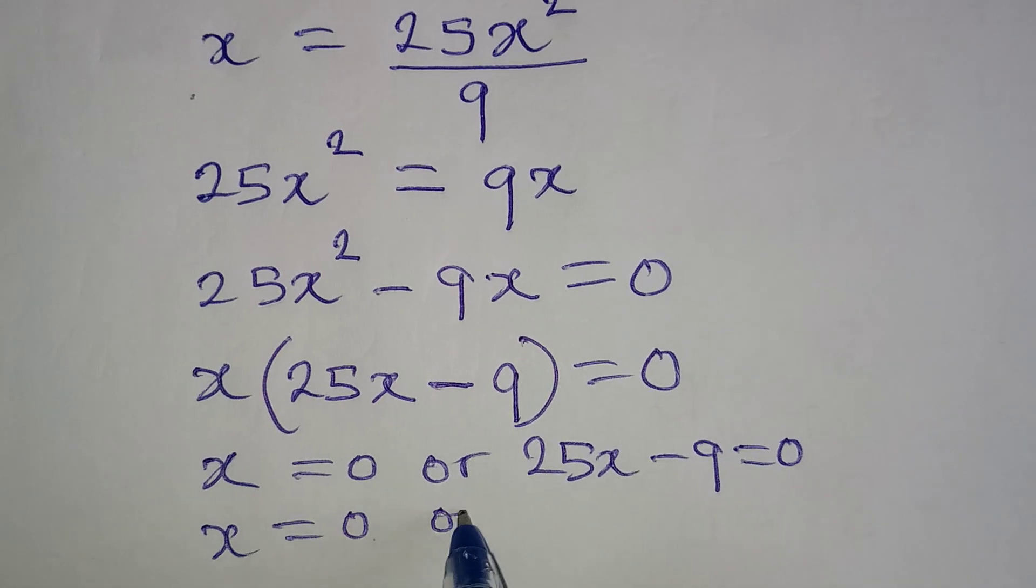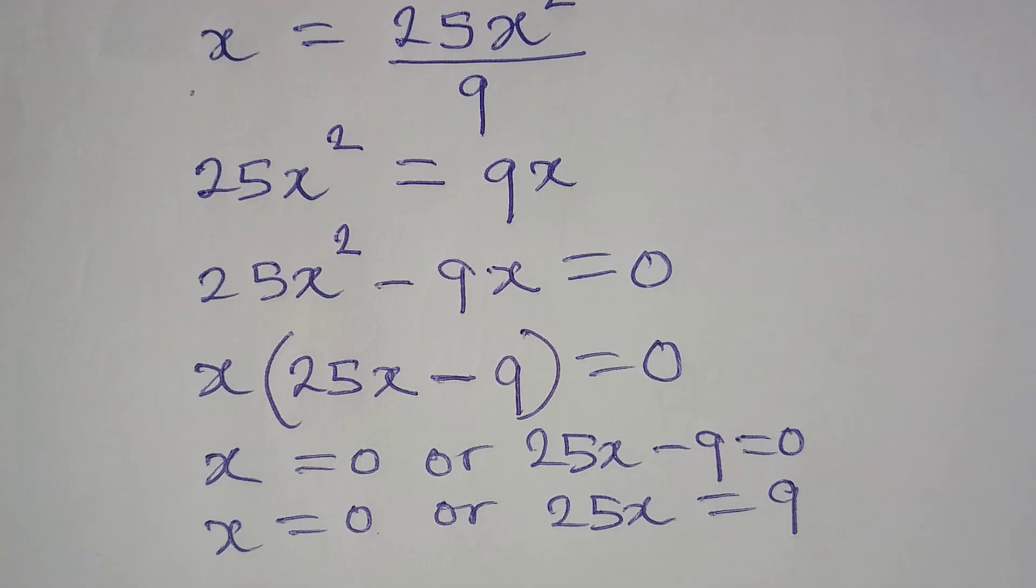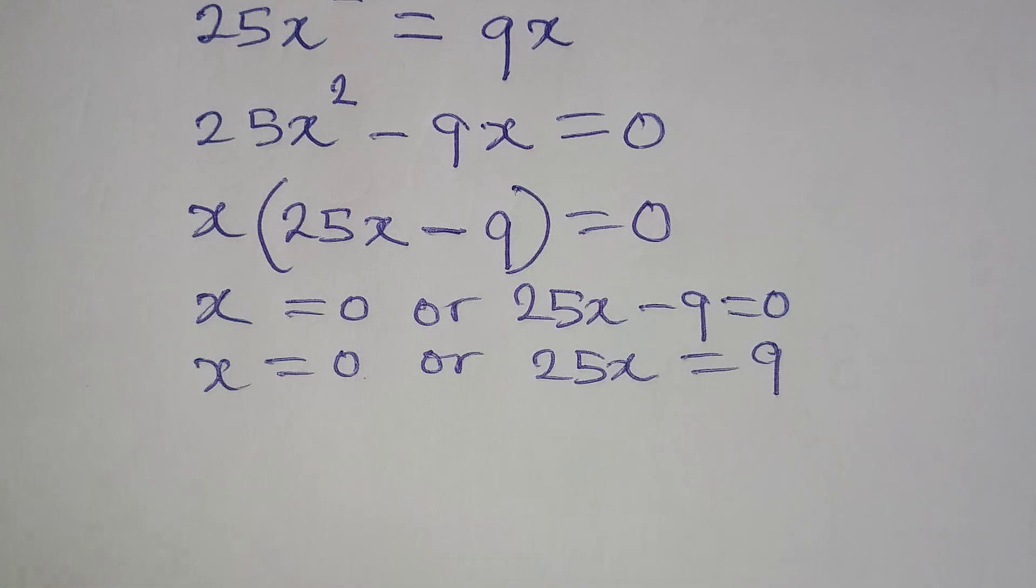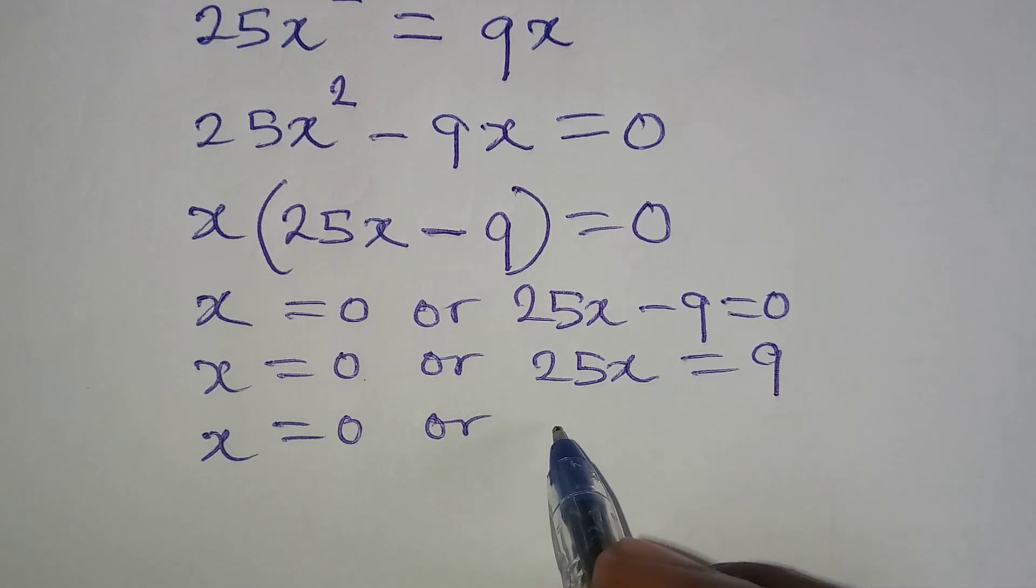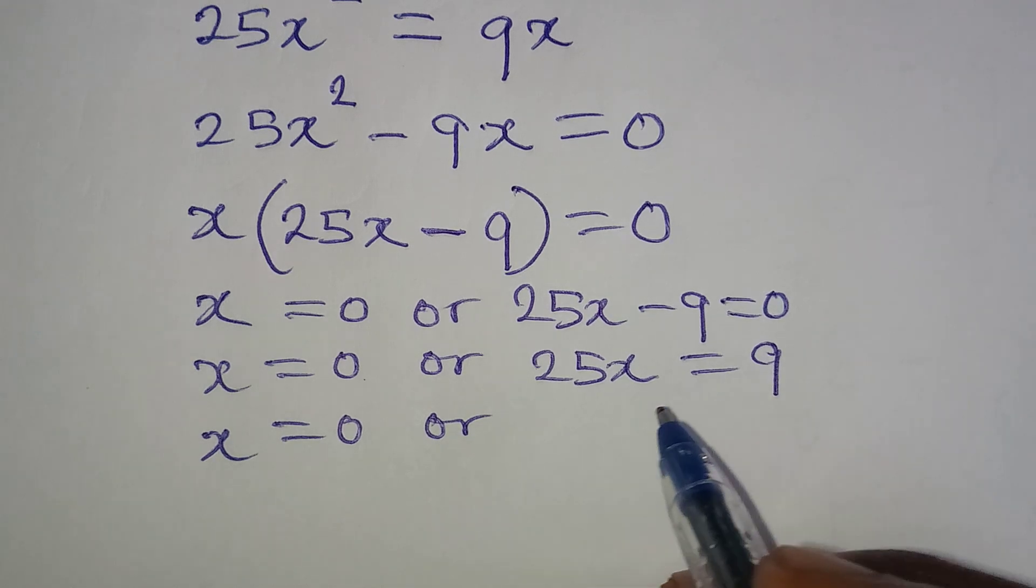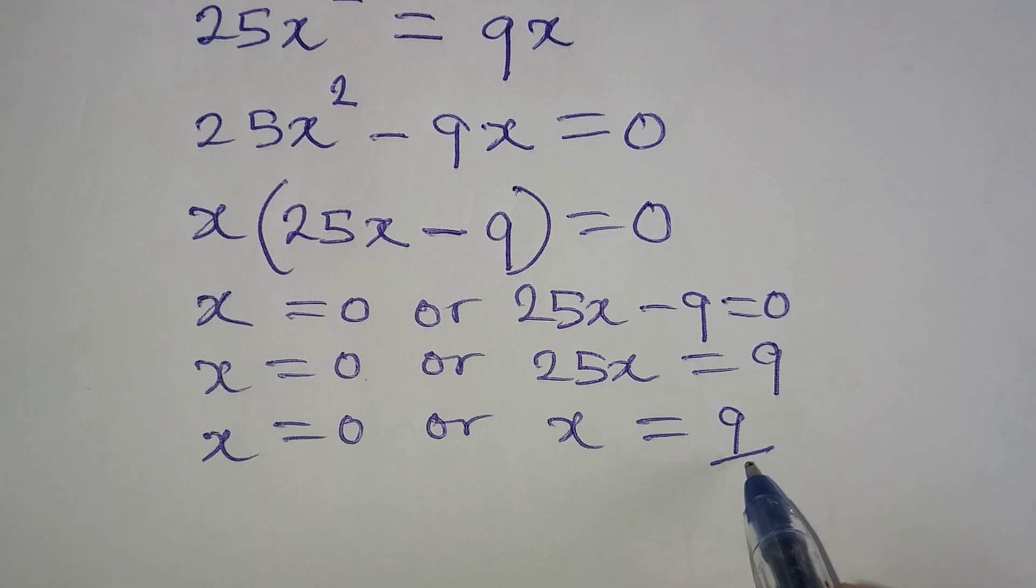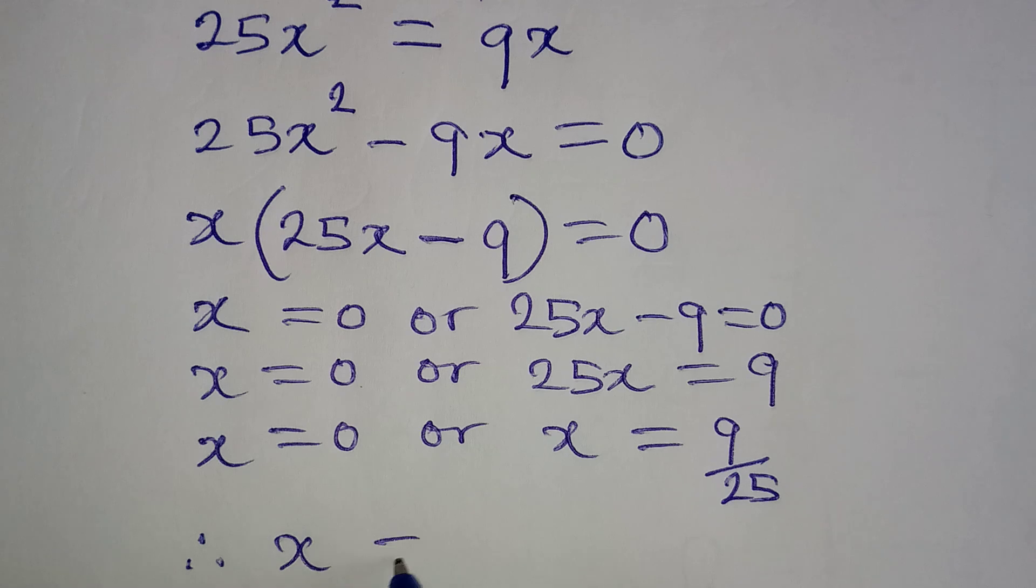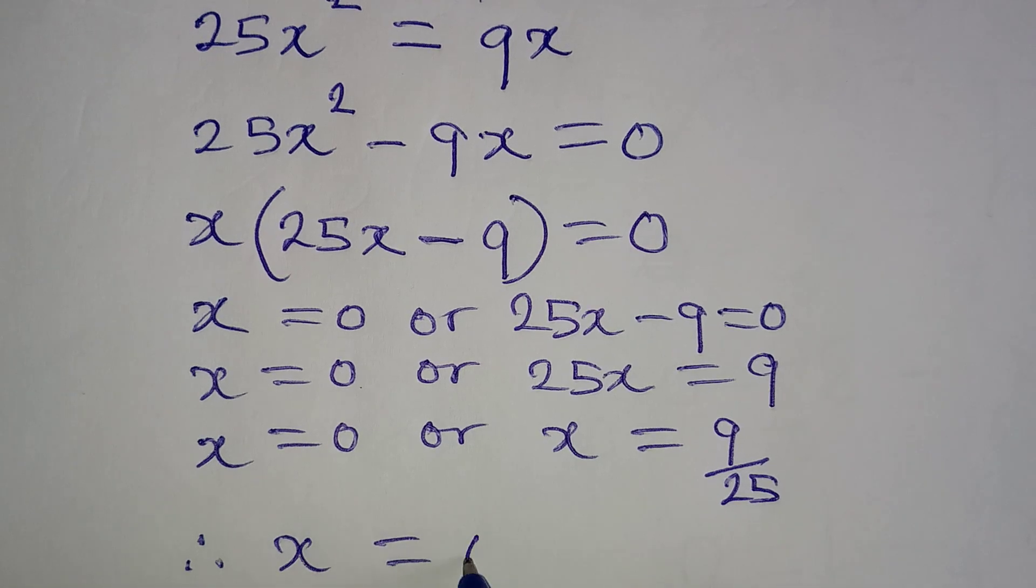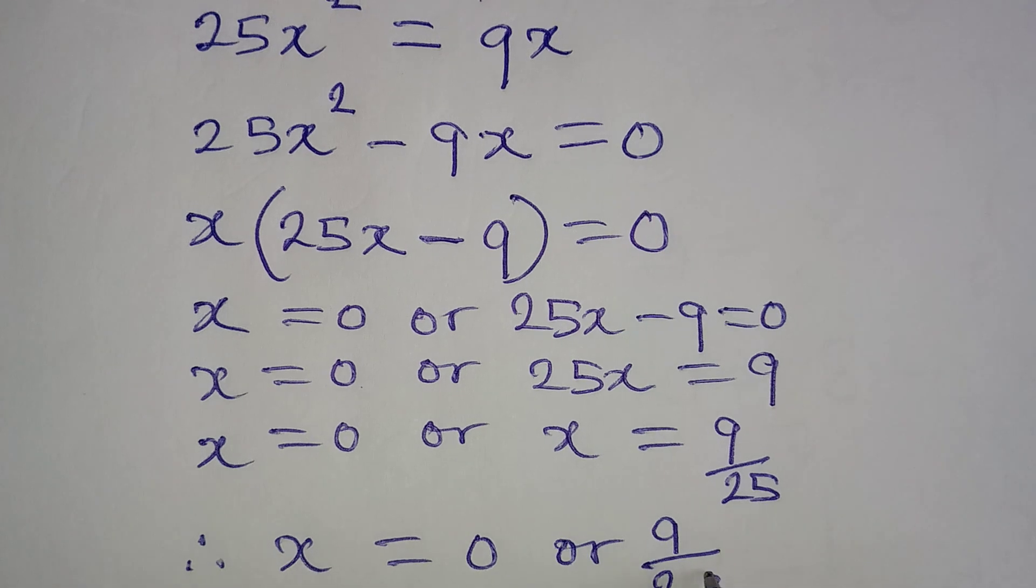X remains 0 or 25x is equal to 0 plus 9 and that is 9. So my x remains 0 or on this side, I can divide both sides by 25 so that x will be equal to 9 over 25. So therefore, we have x to be equal to 0 or 9 over 25.